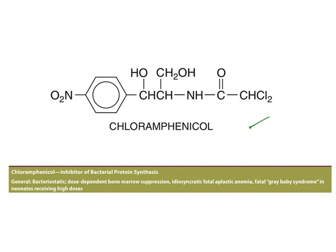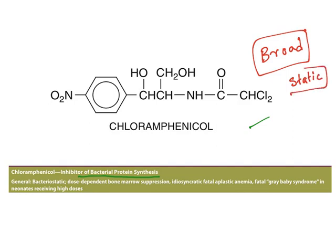First one: chloramphenicol. Chloramphenicol is an inhibitor of bacterial protein synthesis. The important thing about chloramphenicol is it is a broad spectrum antibiotic — along with tetracycline, chloramphenicol is also a broad spectrum antibiotic — but it is bacteriostatic in nature. That means it can control the growth of bacteria by inhibiting protein synthesis, but it cannot kill bacteria.